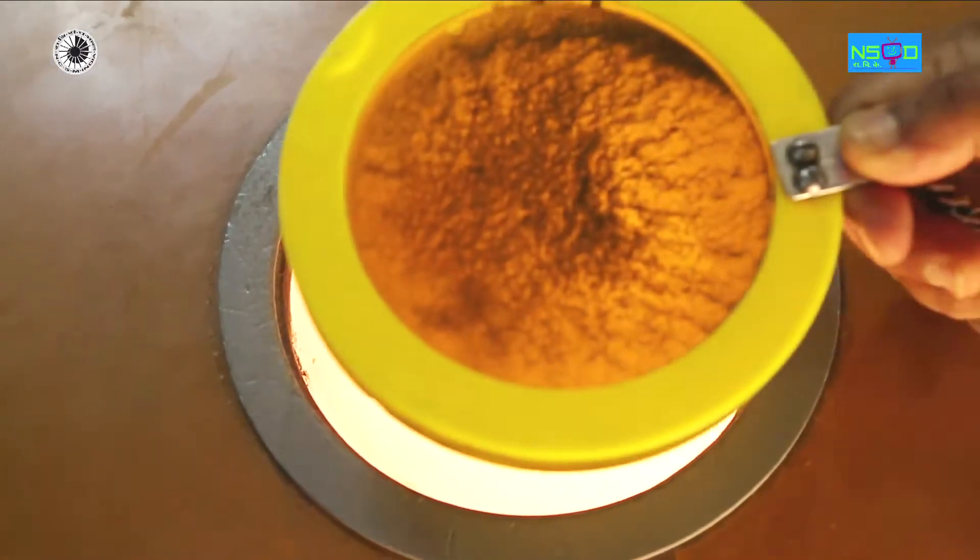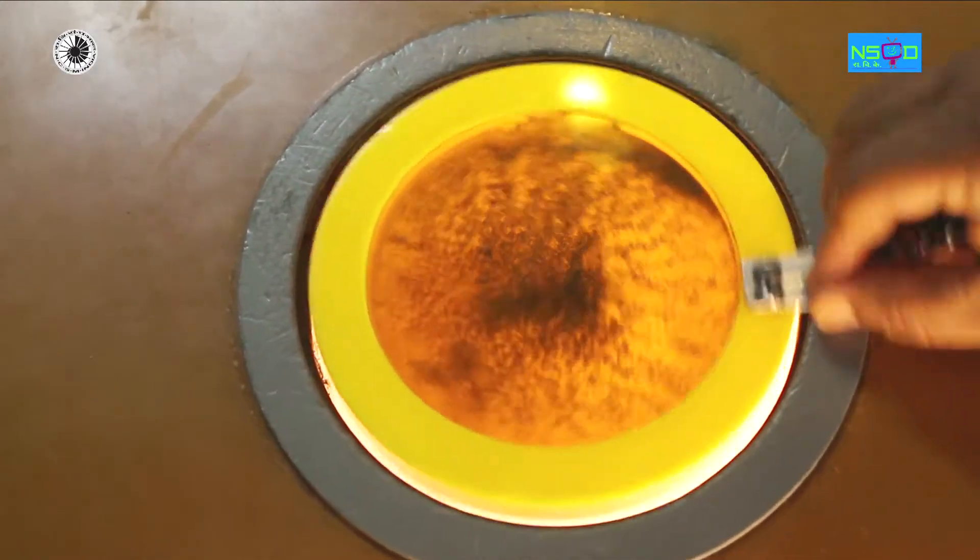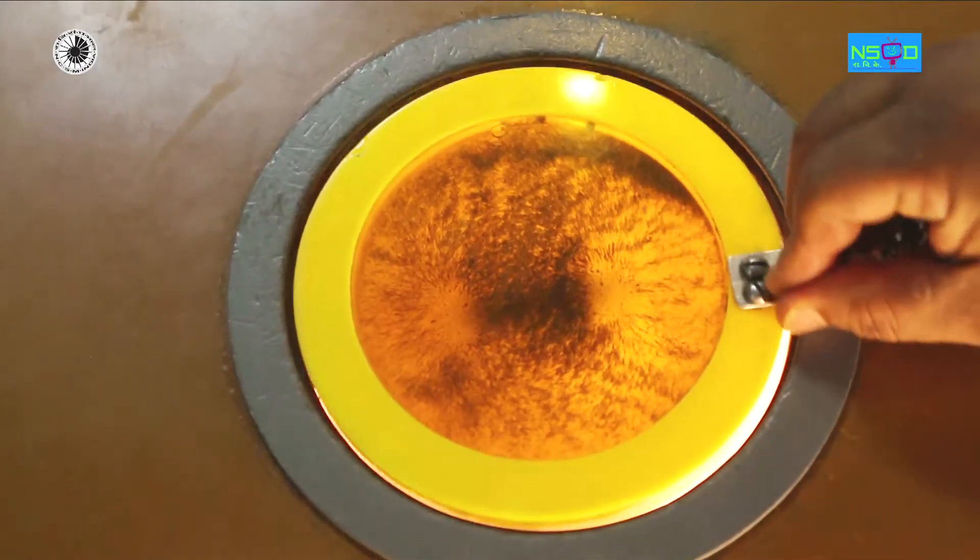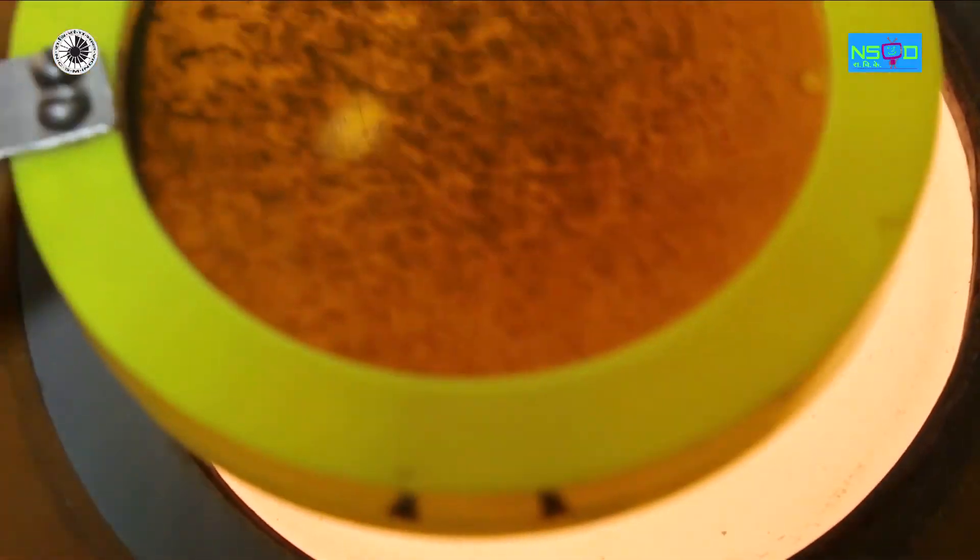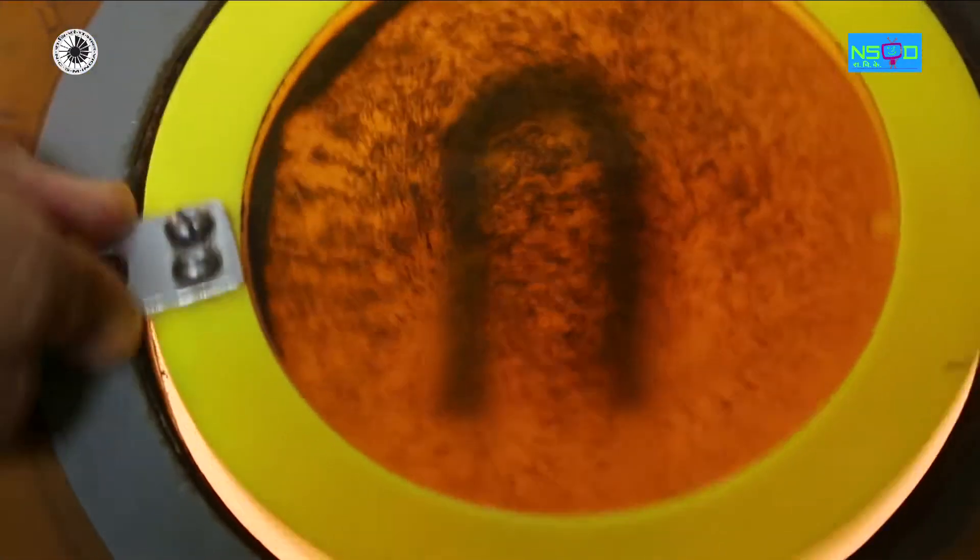Shake the iron powder in the disc to spread it uniformly. Place this disc on top of circular slots. Tap it lightly. Now observe the pattern formed by the iron filings.